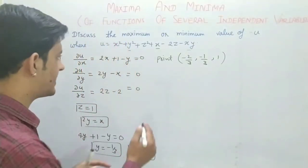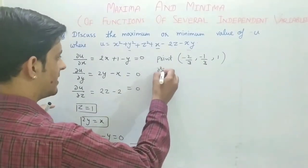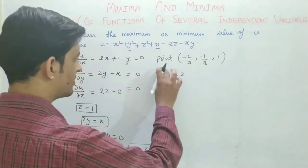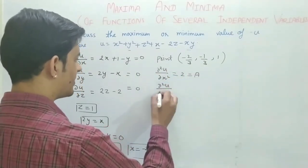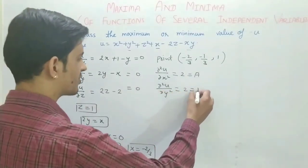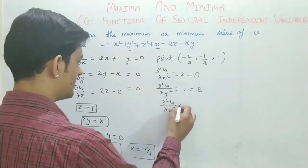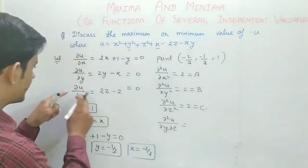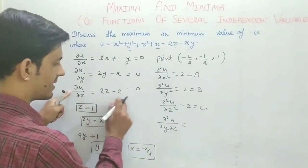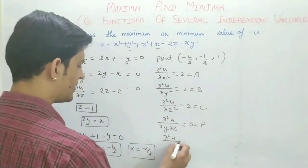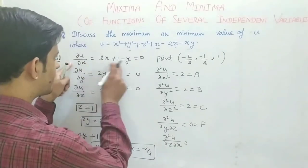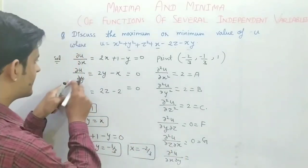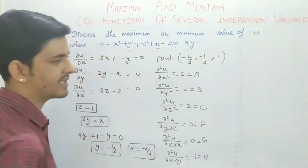At this stationary point, the function will be either maximum or minimum. Now for the second-order derivatives: del² u / del x² = 2, so A = 2. Del² u / del y² = 2, so B = 2. Del² u / del z² = 2, so C = 2. Del² u / del y del z gives F. Del² u / del z del x gives G. Del² u / del x del y gives H. We differentiate with respect to y then z, etc., to find F, G, H values.